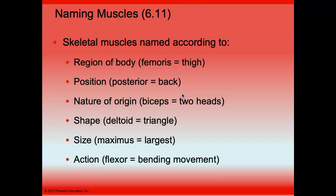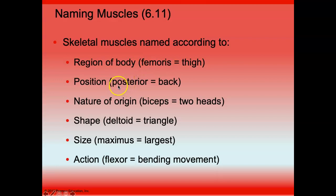Muscle names are informative. They may indicate the region of the body — femoris means thigh, abdominis refers to the abdomen. Words like posterior or dorsal indicate the back of the body. The prefix bi means two heads at the origin, so triceps has three heads. Sometimes the name describes shape, size, or action.